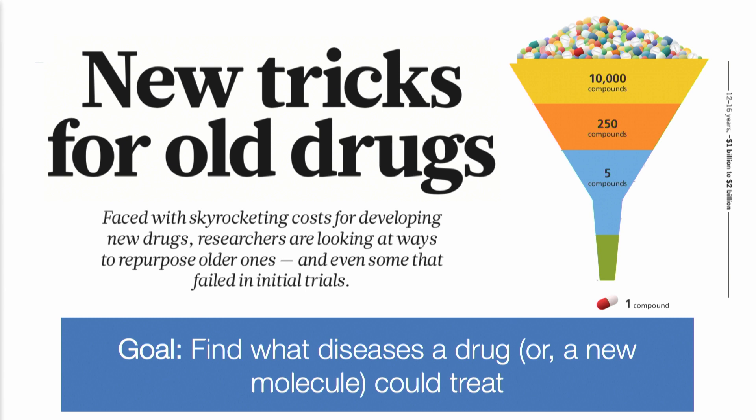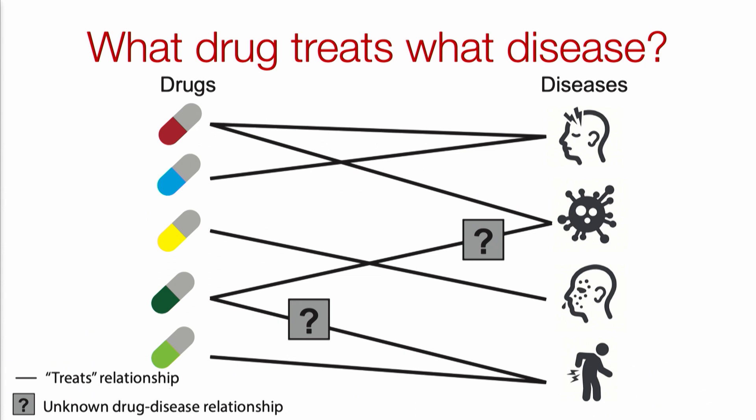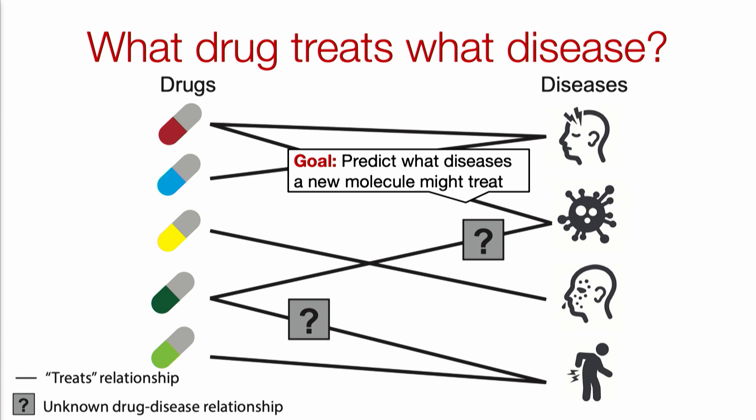Faced with these skyrocketing costs for developing new drugs, researchers are looking for opportunities to repurpose a drug that already exists on the market for a new disease — this is known as drug repurposing. In machine learning terms, the task is: given a particular drug or molecule, what disease could that molecule treat? We can formalize this as a bipartite graph where one side contains all currently approved drugs and the other side contains diseases; the edges indicate known drug-treatment relationships. Our task is to predict new links between drugs and diseases.